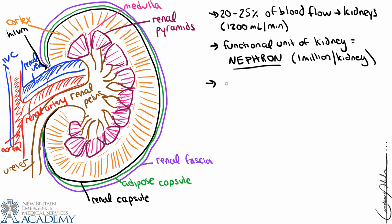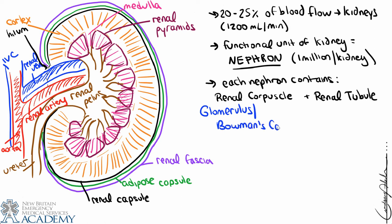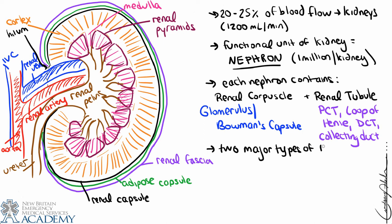Each nephron contains two major subdivisions: a renal corpuscle and a renal tubule. The renal corpuscle is made of the glomerulus and Bowman's capsule. The renal tubule is made of the proximal convoluted tubule (PCT), the loop of Henle, the distal convoluted tubule (DCT), and the collecting duct. I know this terminology is new and unfamiliar, so I'm going to explain each component in the next video. We'll draw them out very specifically and give them lots of attention.